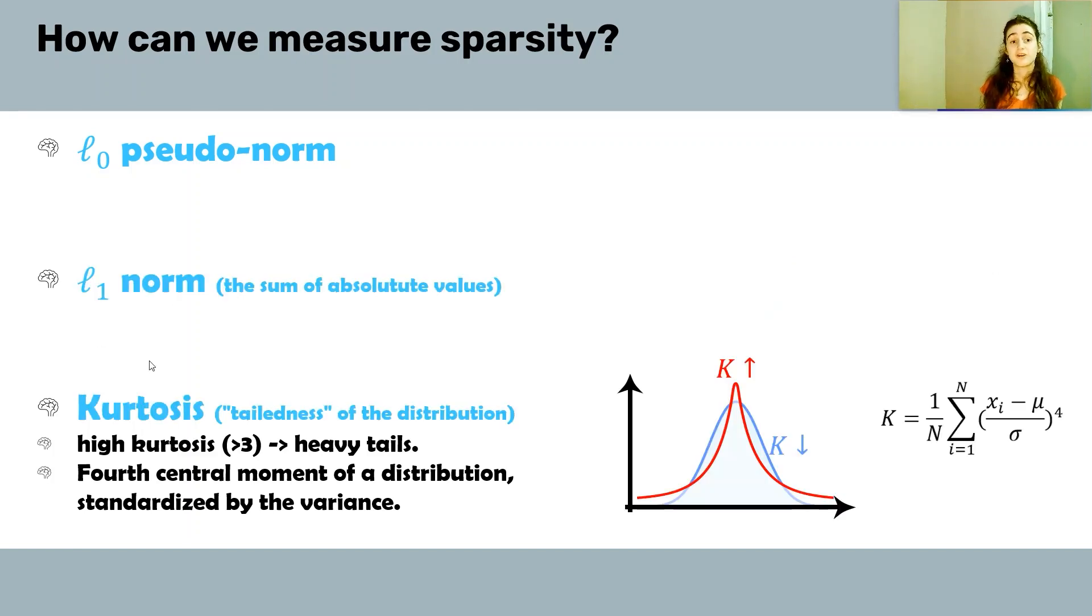In addition, we have the kurtosis, which basically captures how long the tail of the distribution is. If we look at the distribution of the signal and we see a very long tail, it means high kurtosis and higher sparsity. We calculate the kurtosis through the fourth central moment of the distribution, standardized by the variance.